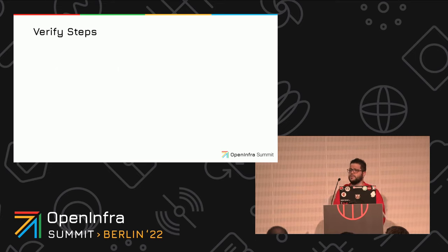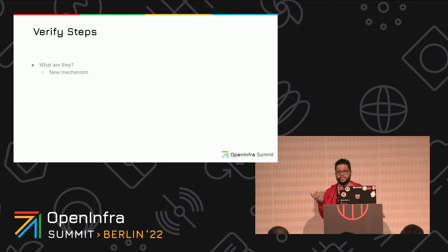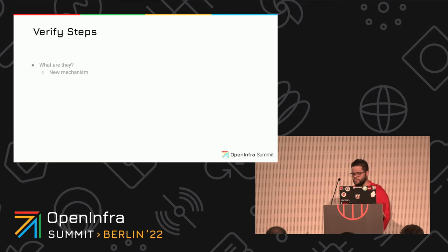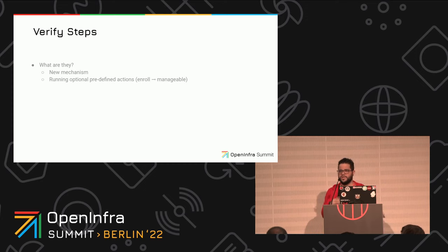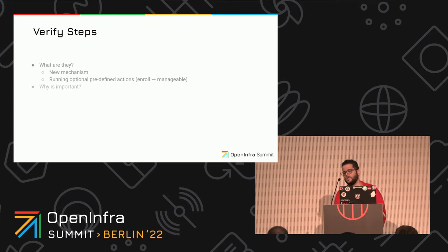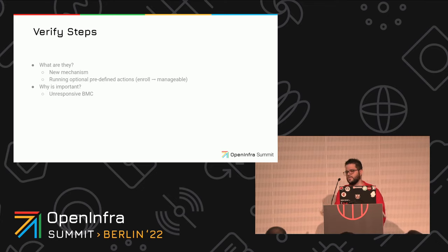Verify steps — it's a new feature that we included in Ironic in the last cycle. It's a new mechanism in Ironic when you are enrolling a node and you want to move it to manageable. Basically, you want to run some pre-steps to verify a few things on your machine — that everything is working before you try to really deploy that machine. So you can run some predefined actions as a verify step and check whether your host is working well or not. We have cases for unresponsive BMCs, like it's frozen and you can't request anything. So that would be a case where you want to make sure your BMC is able to receive all requests and answer correctly.